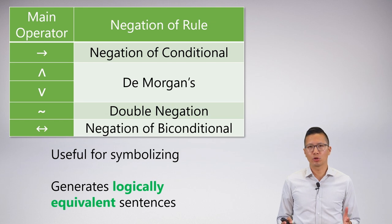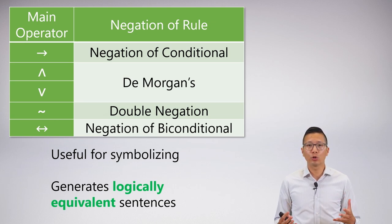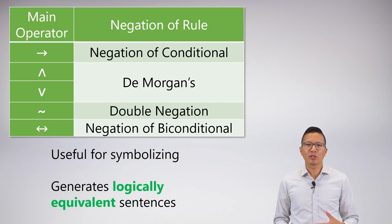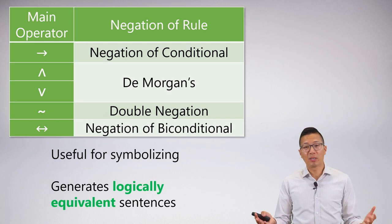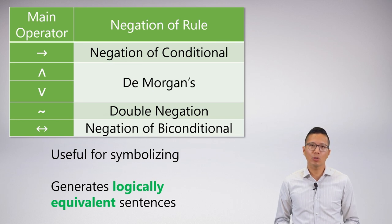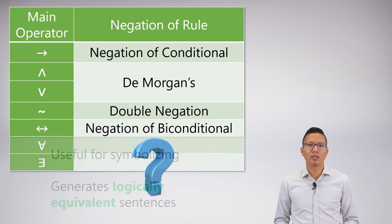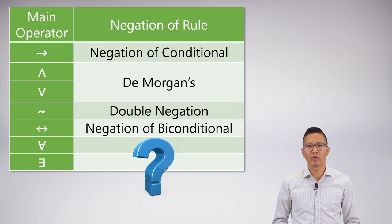When we did derivations in sentential logic, we learned these negation rules: negation of conditional, De Morgan's, double negation, and negation of biconditional. It turns out these are really useful for symbolizing — we can generate lots of logically equivalent sentences this way. What we're missing in predicate logic is the application of these negation rules for our quantifiers. That's what we're going to explore in today's video.